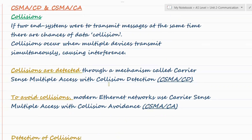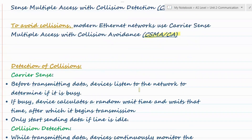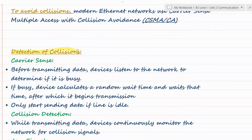Collisions are detected using Carrier Sense Multiple Access with Collision Detection. However, in modern Ethernet we have technology to avoid collisions using Carrier Sense Multiple Access with Collision Avoidance — CSMA/CA. So CD is for detection and CA is for avoidance. If a question asks how collisions can be detected, describe CSMA/CD; if it asks how they can be avoided, describe CSMA/CA.